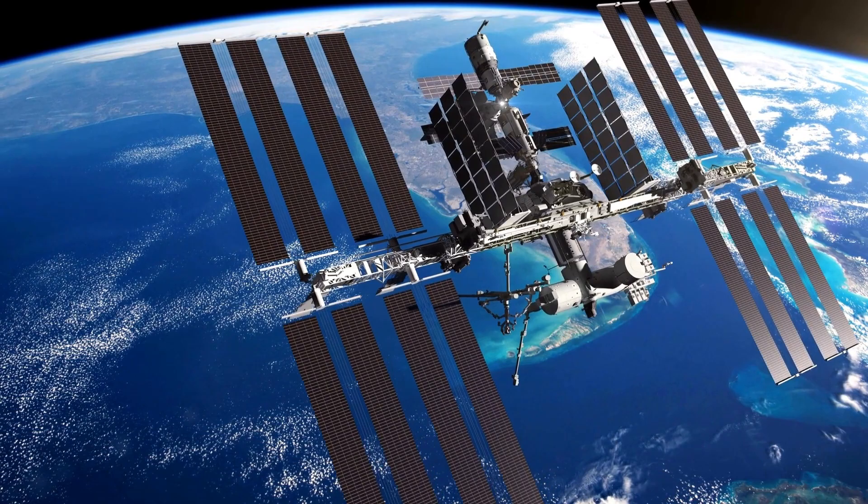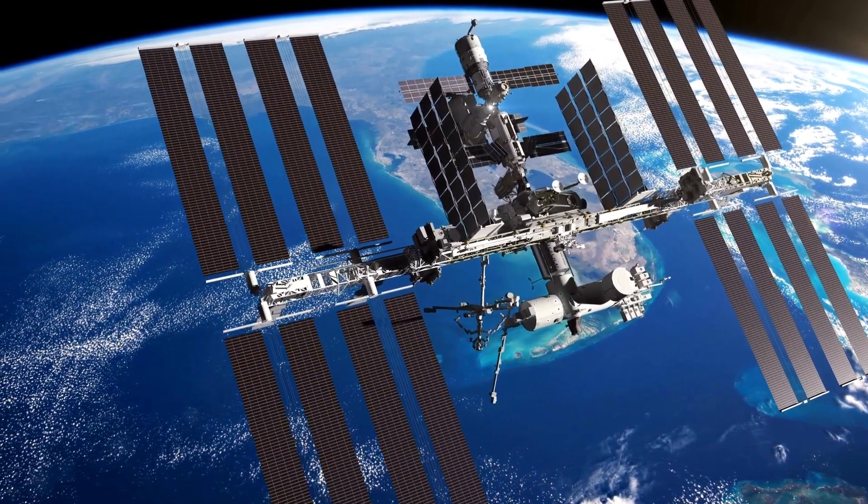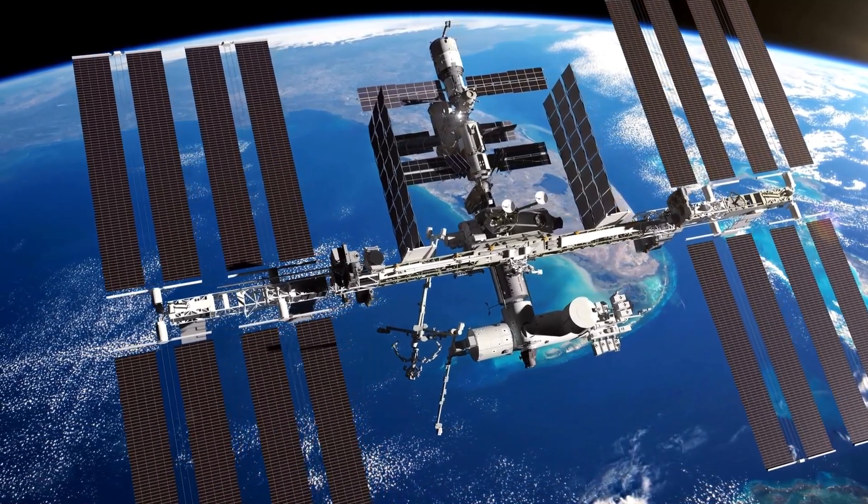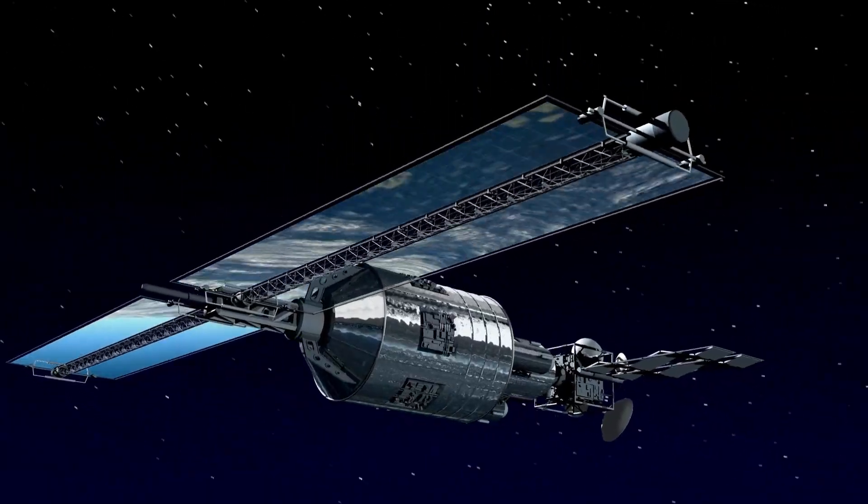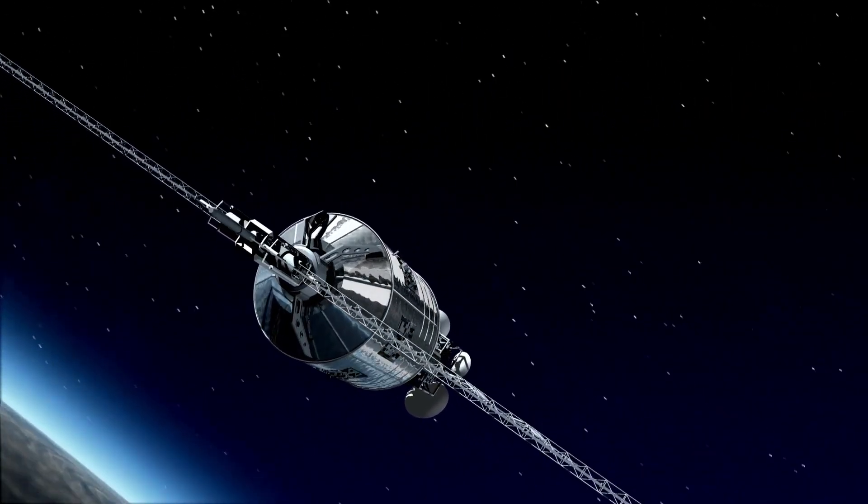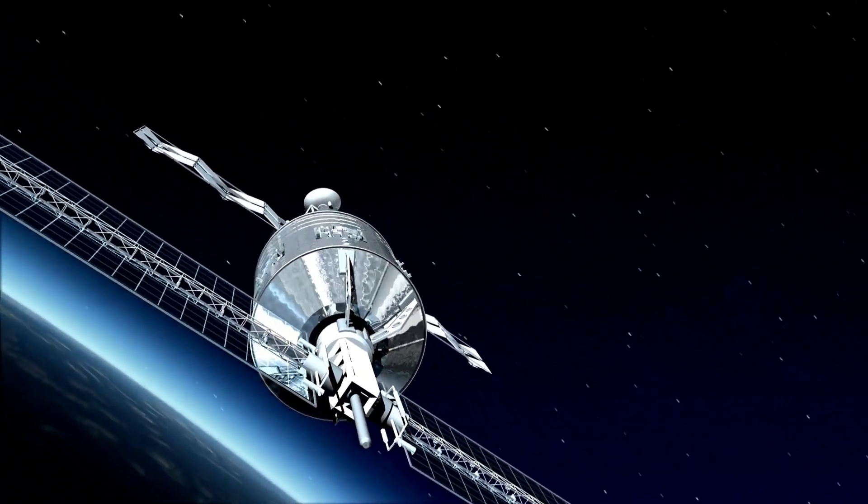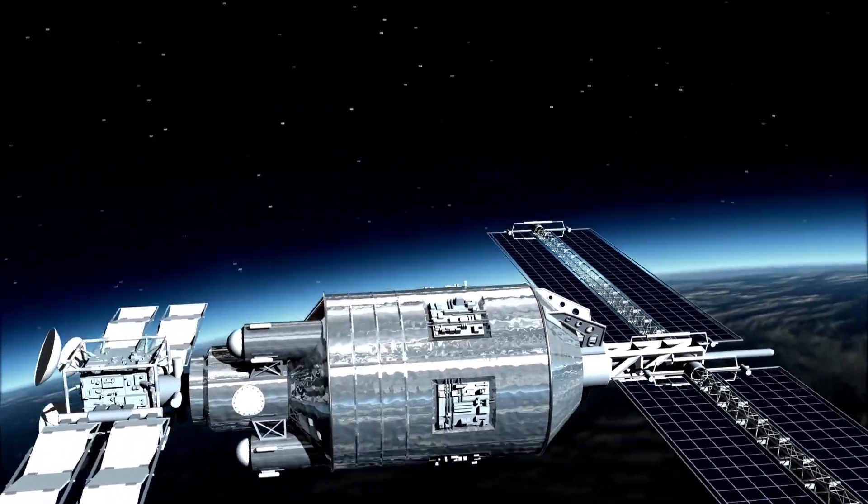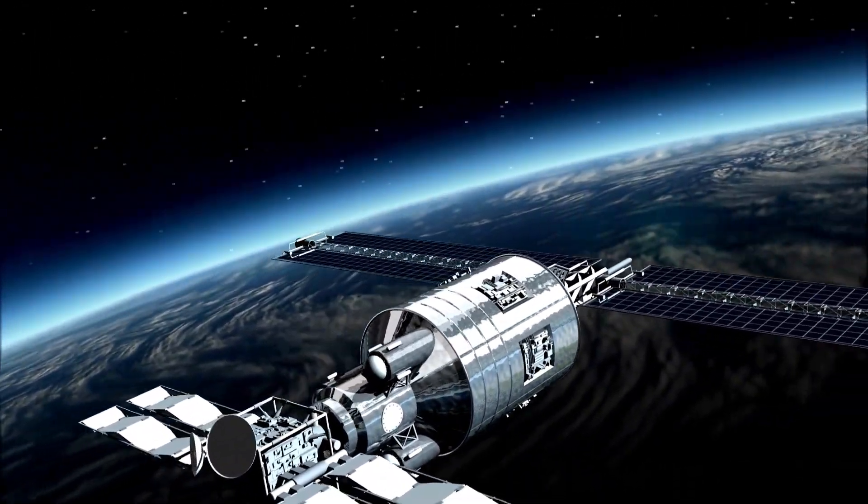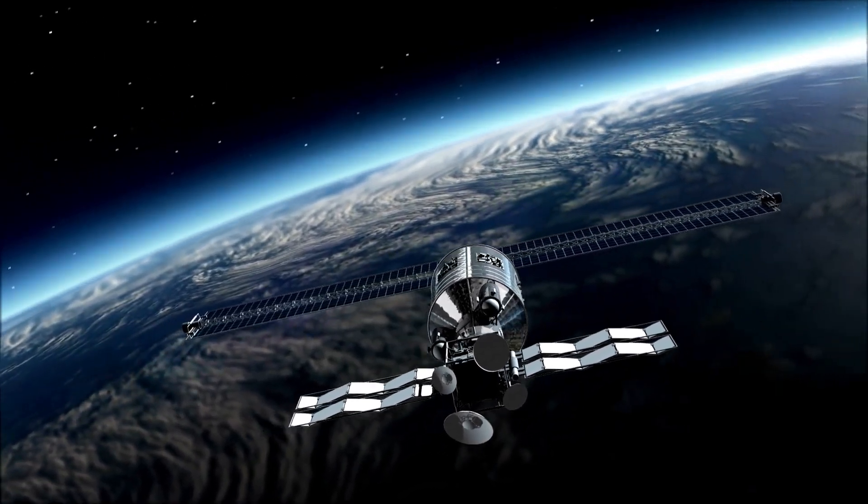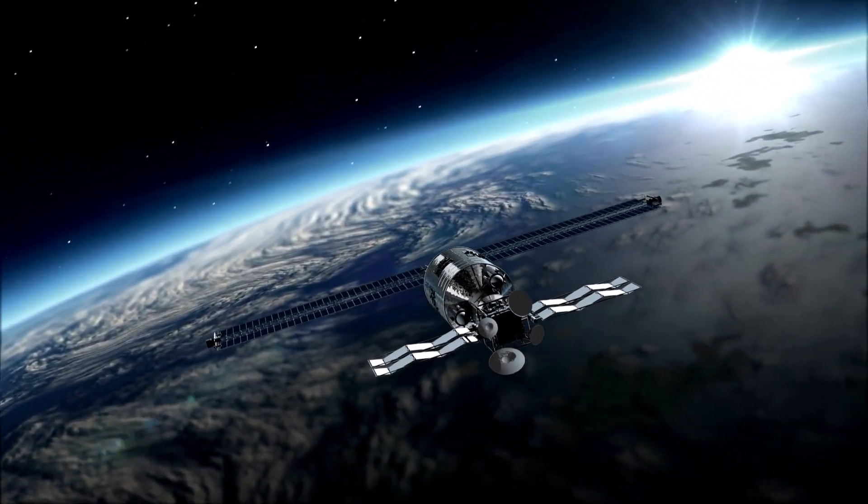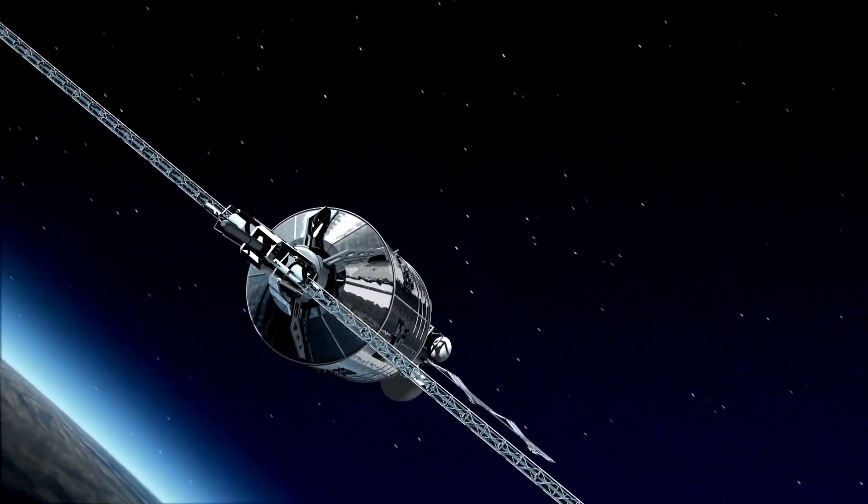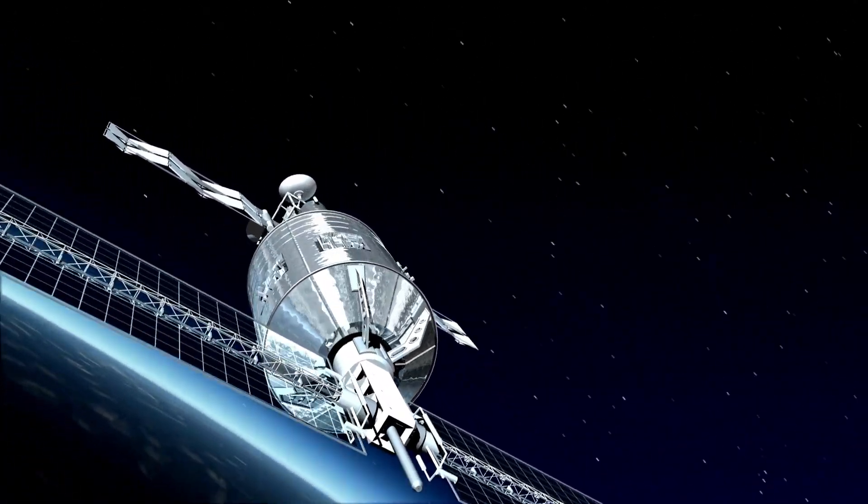Orbital bombardment can deliver larger payloads compared to atmospheric bombardment. In the context of military operations, both orbital and atmospheric bombardment are traditional methods of attacking a target. Orbital bombardment refers to the use of spacecraft or satellites to deliver kinetic or energy-based payloads from space onto a planetary surface. On the other hand, atmospheric bombardment refers to the delivery of payloads from within the planet's atmosphere, such as from aircraft or missiles.